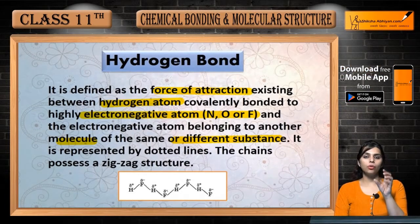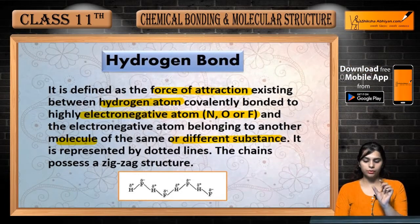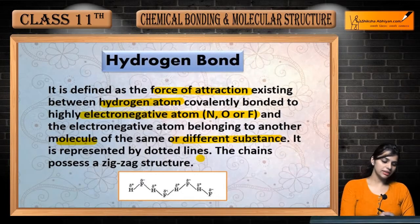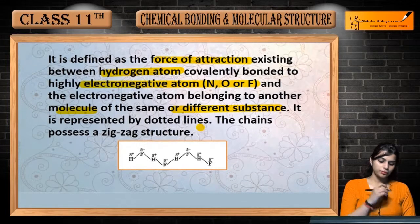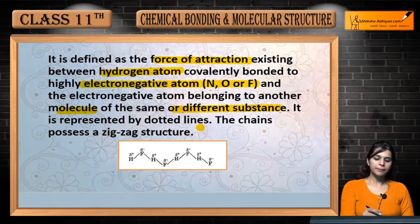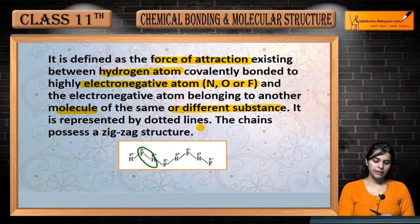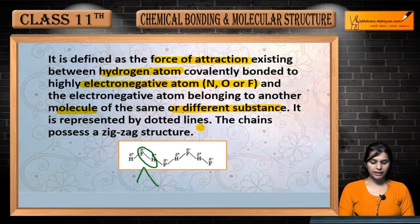The hydrogen bond is represented by dotted lines. The chain possesses a zigzag structure. It is represented by dotted lines, and between H and H this shows a Hydrogen bond, which follows a zigzag structure.